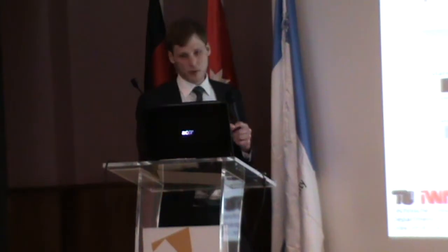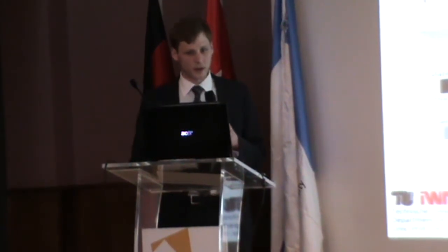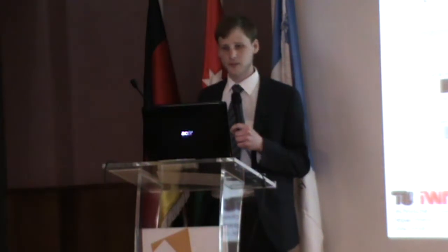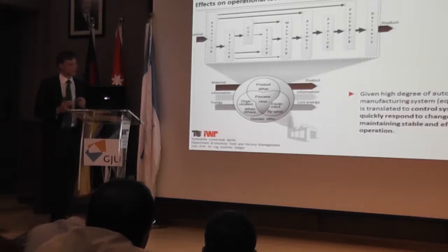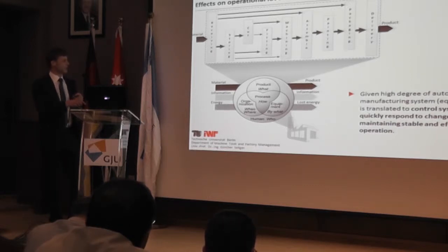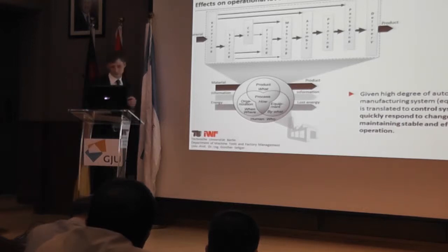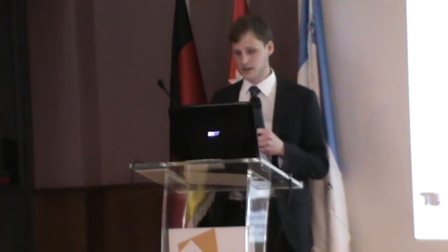We have an exemplary process starting at the receiving of goods — we store them, cut, fit, machine, and so on, and at the end deliver them to the customer. When we assume a high degree of automation in this system, there are different possible paths a product can take through the factory. The high challenge is to quickly respond to changes while the processes should remain stable.